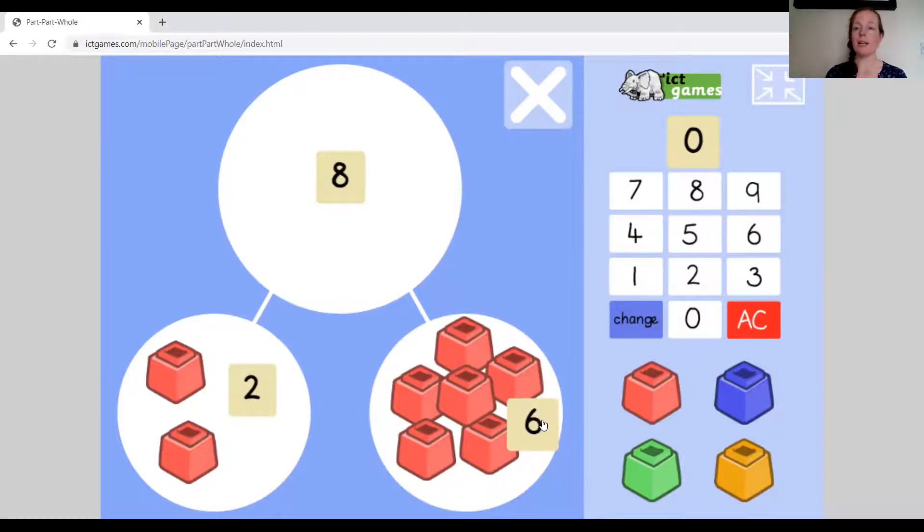Okay, and it's really important that we move those bits from the whole into the parts, because if we leave eight counters in the hole and then we use another eight to make our parts, we're actually ending up with a lot more than eight counters. Okay, right, so let's come out of that now.